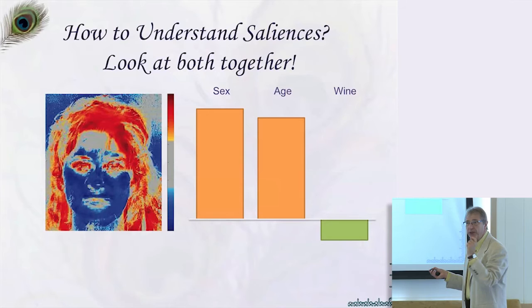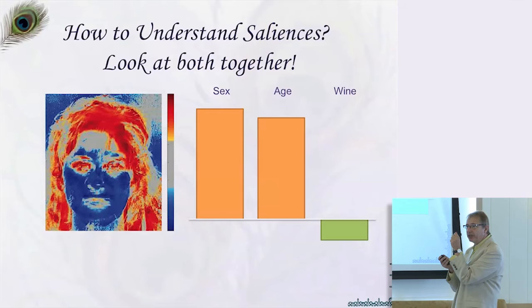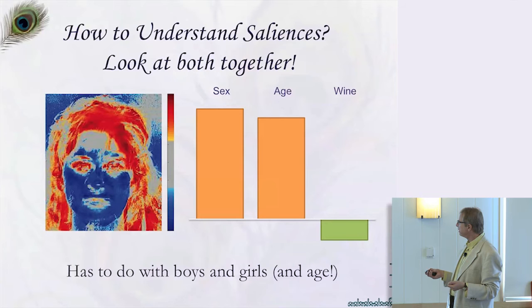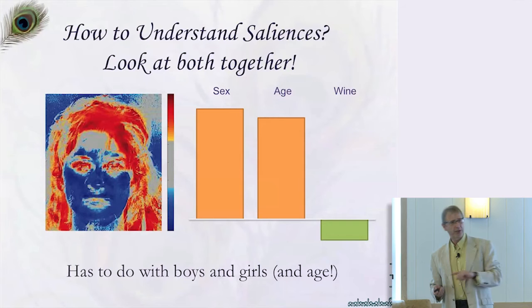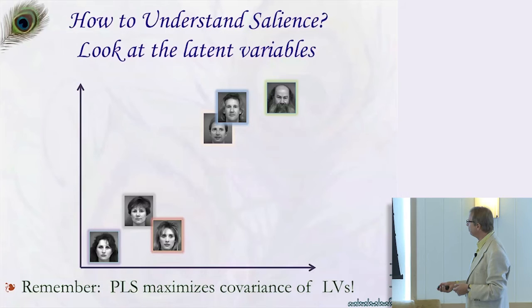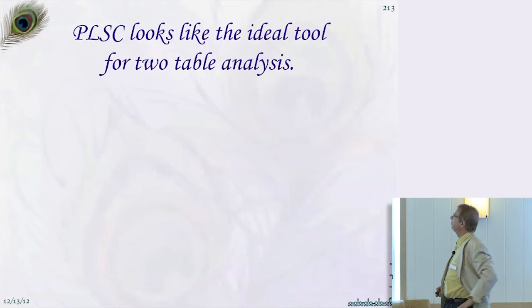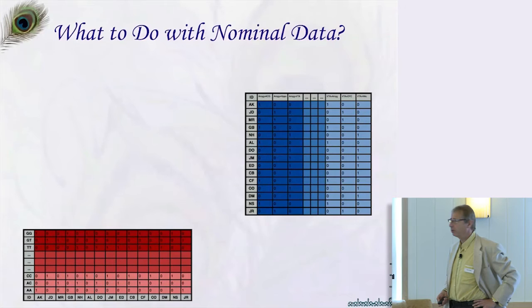Mathematically, we start with a cross-correlation matrix and obtain latent variables through singular value decomposition. For example, the latent variable for behavior might take 0.5 of sex, 0.5 of age, and ignore wine; for the face/brain images, red pixels get a negative weight and blue get a positive weight, combining to one number per person. The problem is this works with quantitative data, but our SNP data is nominal. With nominal data, the only thing you can do is count.